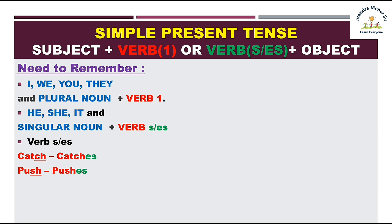Jab verb ke end mein CH, SH, O, double S, ya X aata hai toh ES add karna hai — jaise catch→catches, push→pushes, go→goes, pass→passes, box→boxes. Aur remaining verbs ke saath sirf S add karna hai.